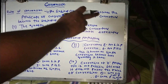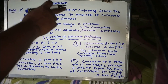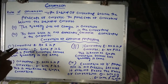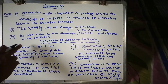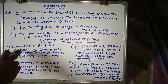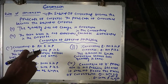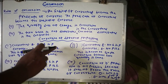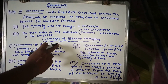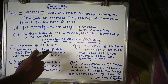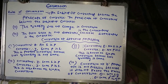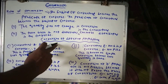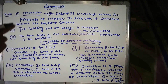The first rule: the subject of the convertent becomes the predicate of the converse, and the predicate of the convertent becomes the subject of the converse. For example, in an A proposition: 'All S is P' — the converse is an I proposition: 'Some P is S.' The subject S becomes the predicate, and the predicate P becomes the subject.